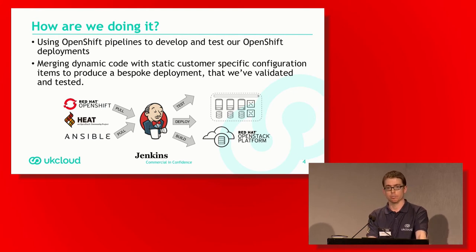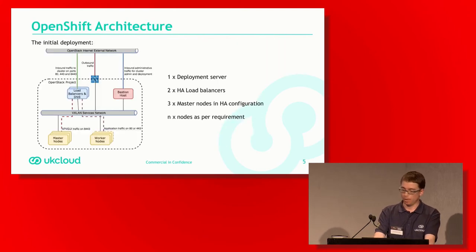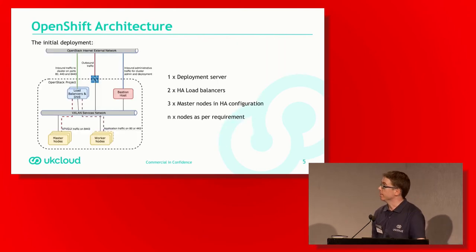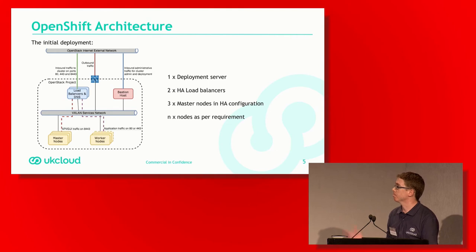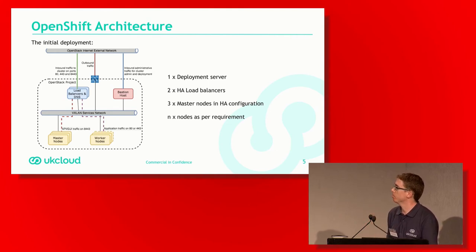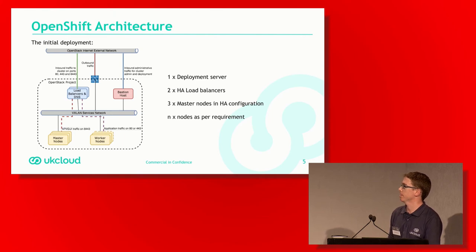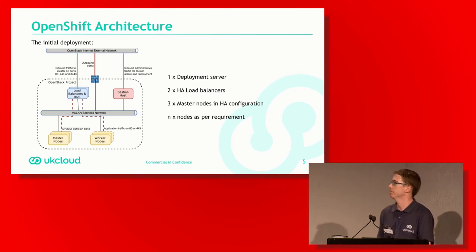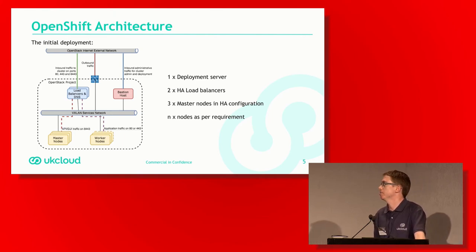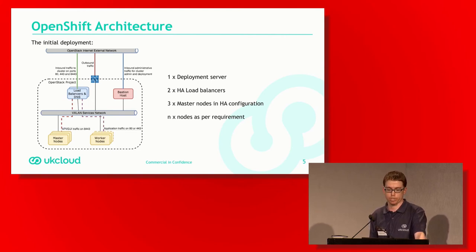We then run some tests to prove that the cluster is working as we'd expect. The initial deployment is a basic customer deployment: a deployment server where we run all the actual deployment from, some load balancers in an HA configuration, and master nodes in an HA configuration as well. We deploy the number of nodes according to the cluster scale that the customer requires.